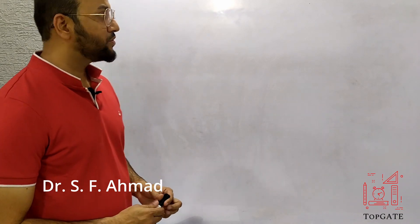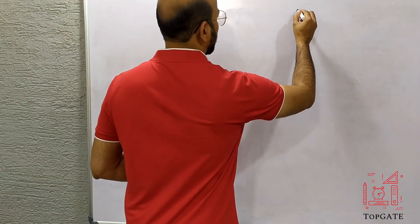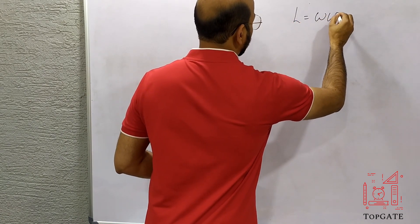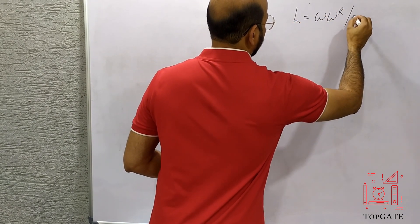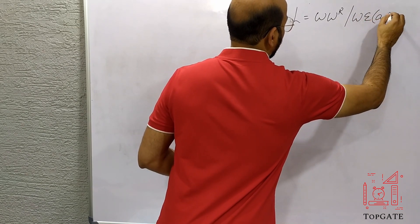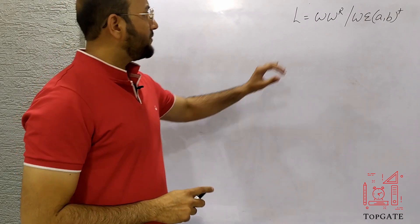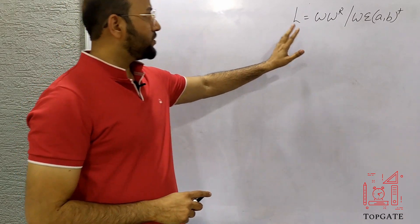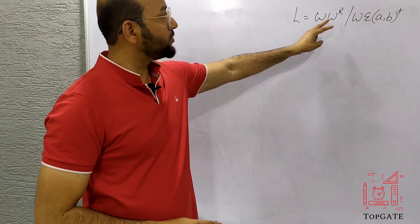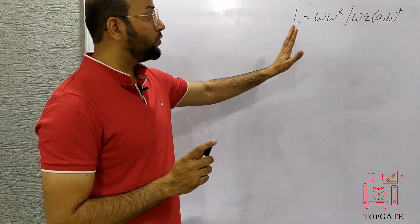Hello students, today we will discuss one question of PDA — that is to design a PDA for the language L equal to WW^R, where W belongs to {A, B} plus. So the first part of the string will be a combination of A and B, any combination of A and B excluding null.